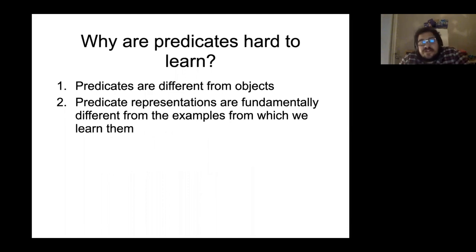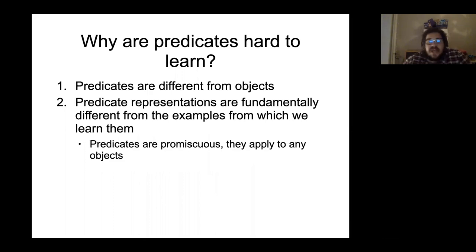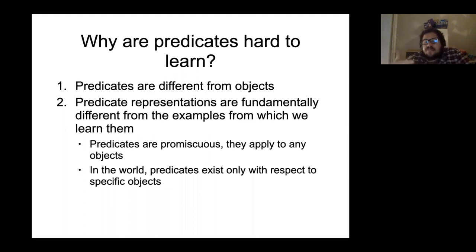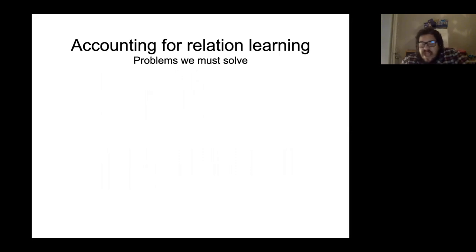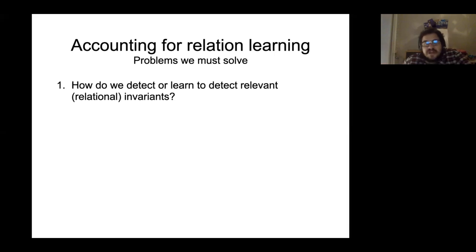The second issue is that predicate representations are fundamentally different from the examples from which we learn them. Predicates are promiscuous — once we learn what 'aboveness' is, we can apply it to any set of two things — but we never actually get such disembodied representations in our experience. Every relation we experience is tied to a particular object, so the instances from which we learn predicates are fundamentally at odds with the end-state representation we have.